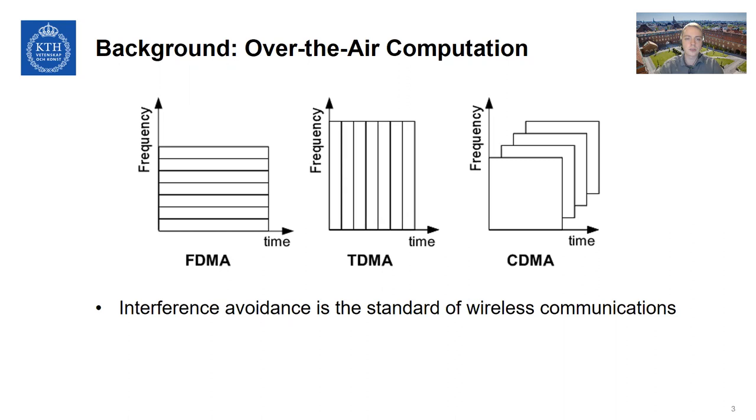So for instance, in FDMA, we can divide the spectrum into small slices so that each user has their own slice of bandwidth that they can communicate over. Similarly, TDMA can employ diversity in the time domain and CDMA can do it in a coding domain. Also for 4G and 5G networks, OFDMA achieves the same effect.